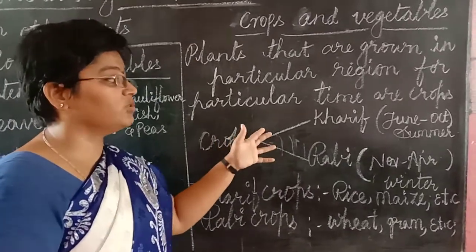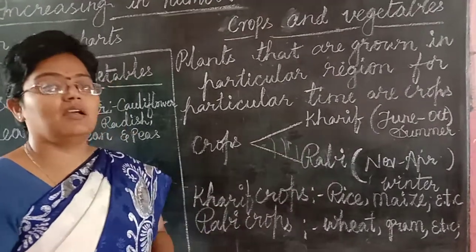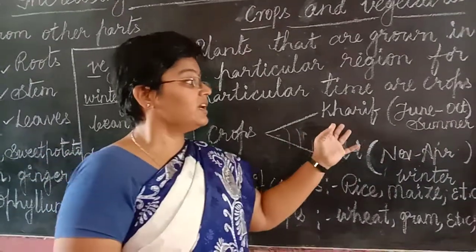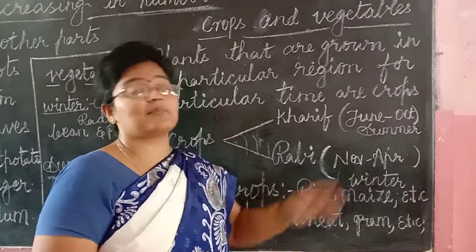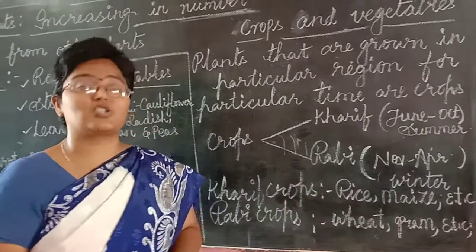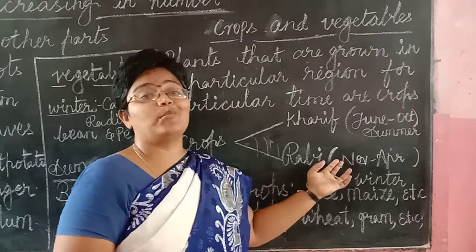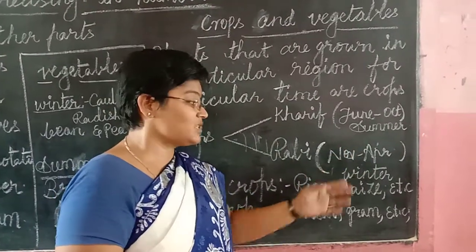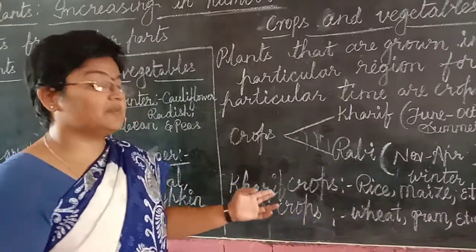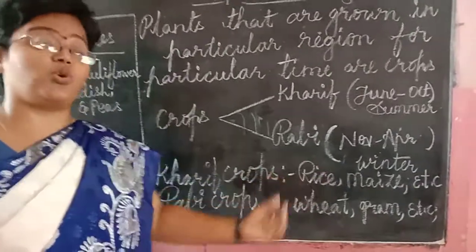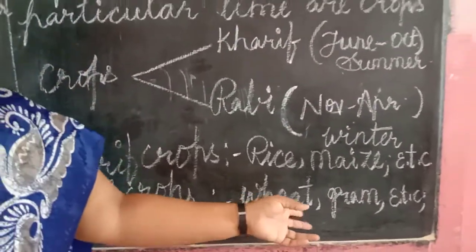Crops grown in different seasons are named Kharif and Rabi. Kharif season crops are grown from June to October and are called summer crops. Rabi crops are grown from November to April and are called winter crops. Examples of Kharif crops are rice and maize, whereas Rabi crops include wheat and gram.